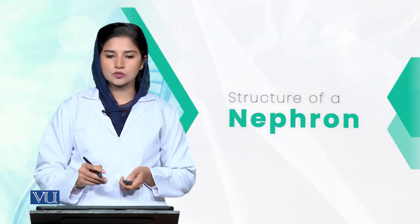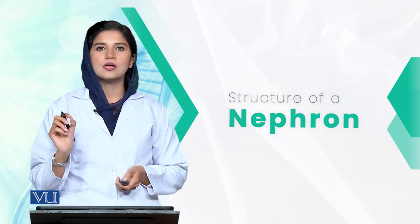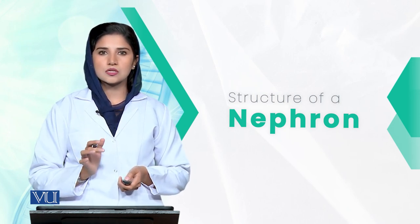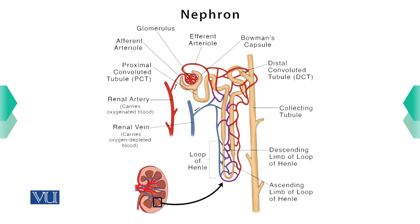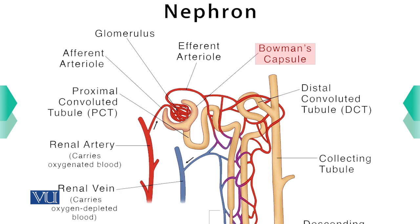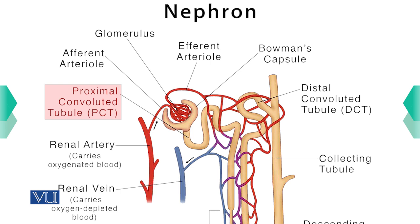Looking at the nephron structure — the single unit inside the kidney — the kidney is made up of many nephrons. Inside the Bowman's capsule there are many bundles of arteries called the glomerulus. Blood passes through small pores in the glomerulus into the Bowman's capsule. Red blood cells and proteins are not present in this filtrate because their size is too large to pass through those small pores.